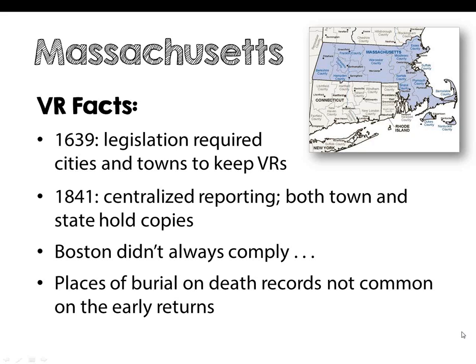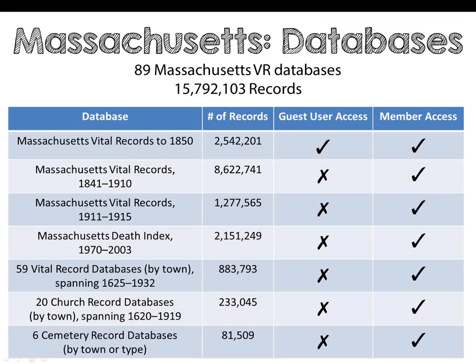We offer 89 vital record related databases on AmericanAncestors.org for Massachusetts with over 15 million records. This includes the official series of Massachusetts vital records to 1850, known commonly as the TAN books, with over 2.5 million records. The statewide Massachusetts vital records are also searchable for the years 1841 to 1910, and then a separate database for 1911 to 1915, containing 10 million records. We also have the Massachusetts statewide death index from 1970 to 2003 with over 2 million records, plus 59 vital records and 20 church record databases for specific cities or towns, and six cemetery record databases with 81,000 entries.